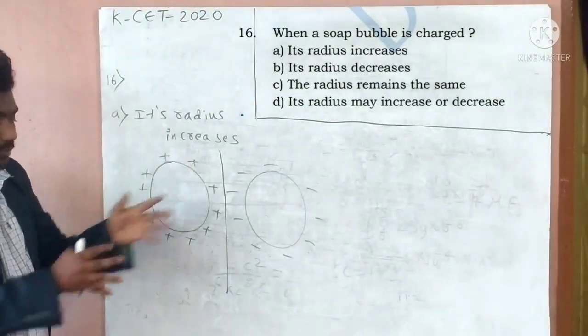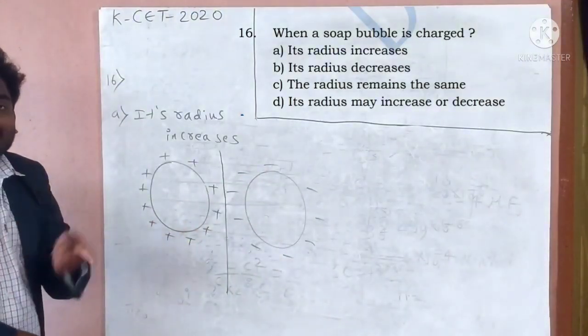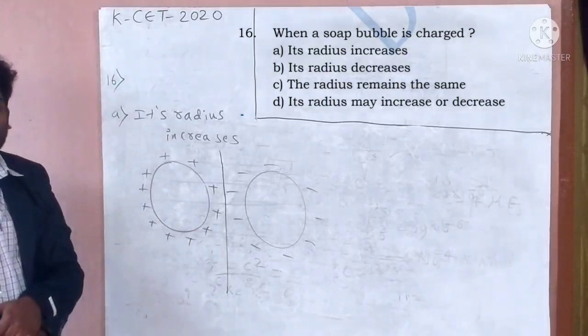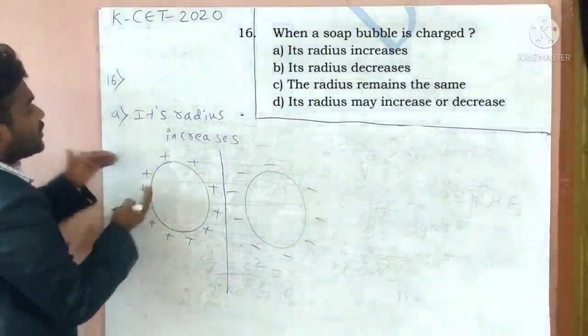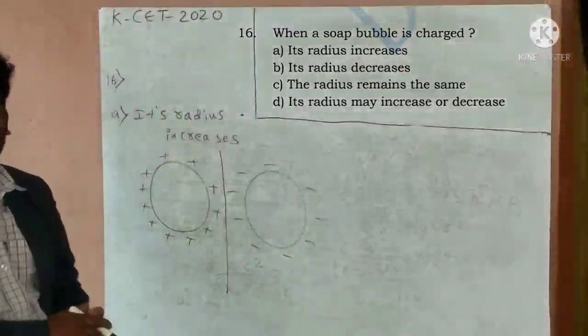Repel each other. Positive, positive, repel. Negative, negative, repel each other. So, similar charges are going to repel each other. So, that's why radius of the soap bubble is going to increase. Increase. Is it clear?